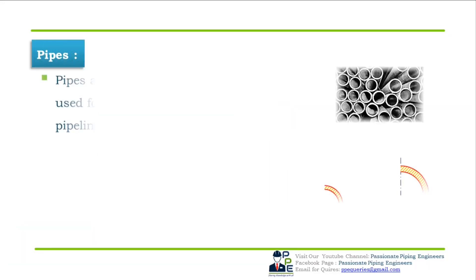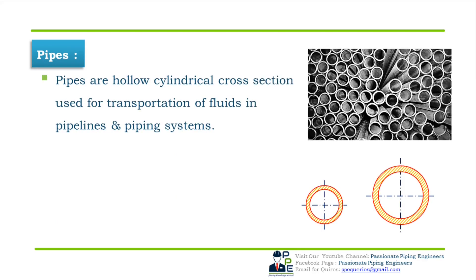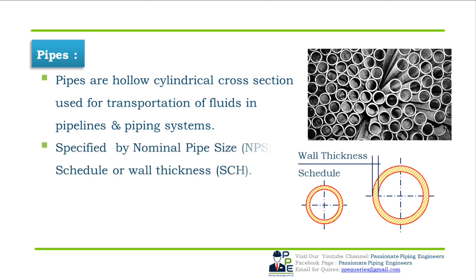A pipe is a hollow cylindrical cross-section used for transportation of fluid in pipelines or piping systems from one point to another. You can also say that a pipe is a pressure-tight cylinder used to convey fluids under pressure from point A to point B. Pipes are specified by Nominal Pipe Size (NPS) and schedule or wall thickness.